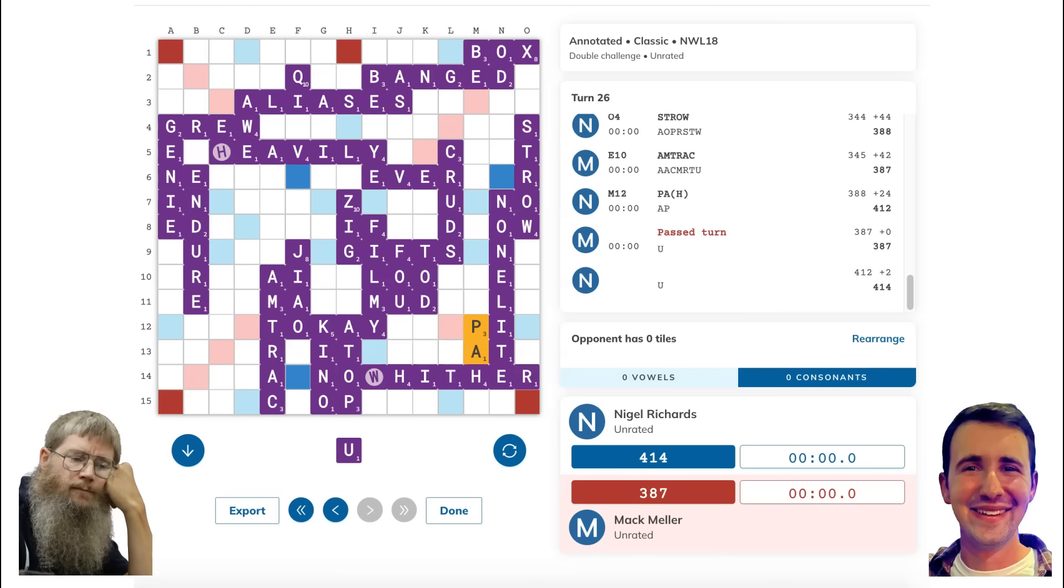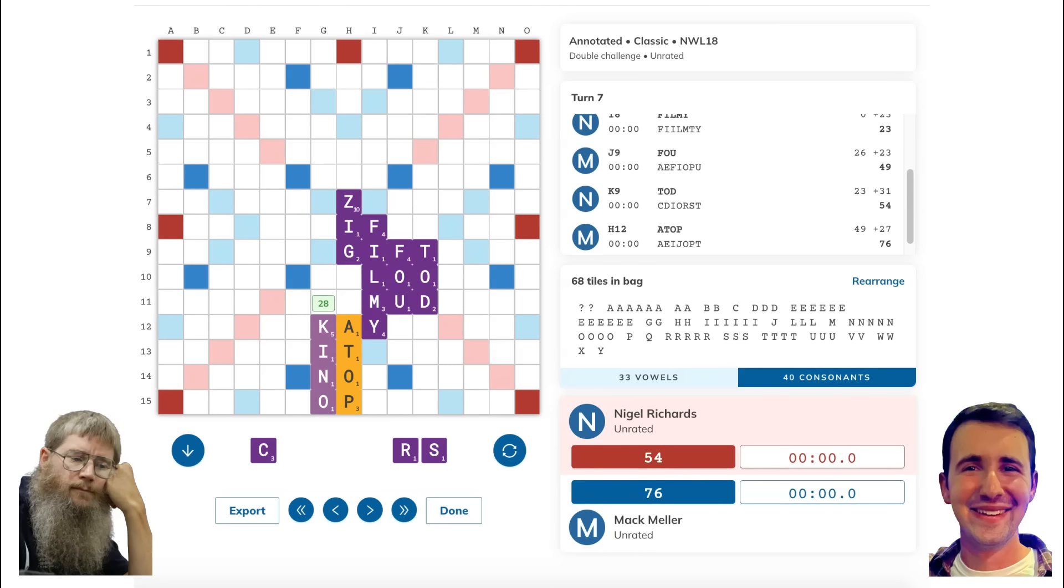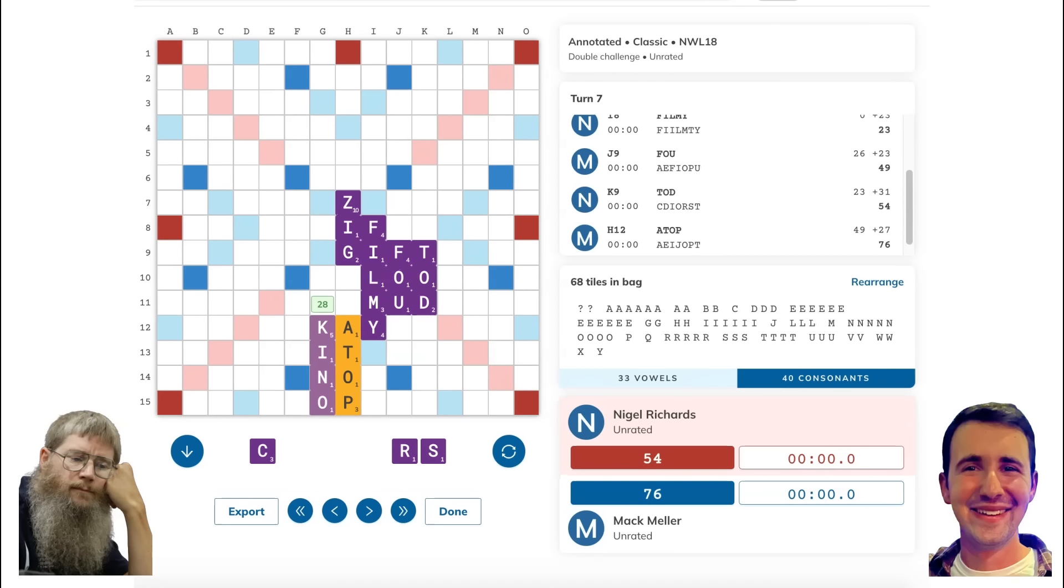So really, really cool stuff, and one turn I want to look back on too is way back when Nigel played KINO for 28 keeping CRS instead of what seems like the more standard CROOK for just one fewer point keeping the more balanced INS. Is it possible that Nigel foresaw like eight more turns into the future and just figured, I'm going to get a nine from this NO or through this OP at some point and surprise my opponent? We'll never know, but I certainly wouldn't put it past him, and it'll forever be one of the great mysteries surrounding the brilliant mind of the greatest Scrabble player of all time.